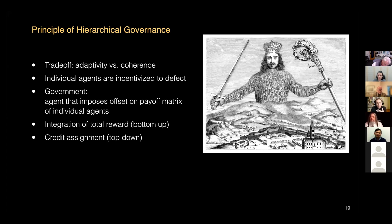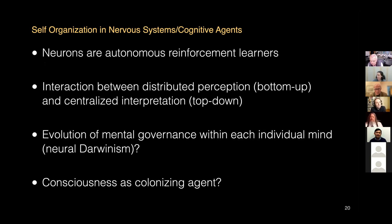Individual agents are often incentivized to defect from the system. You may have to limit this by having an agent that imposes an offset to the payoff matrix of the individuals — this is what we call a government. The need for a government comes not from political constraints or the desire to exploit people, but is a game-theoretic thing derivable from first principles. The purpose of this government is to integrate the total reward — which can happen bottom-up — and to do top-down credit assignment, ensuring that individual behavior is adjusted so the Nash equilibrium of the individual agents becomes compatible with the common good. This also needs to happen in some sense in our own brain.